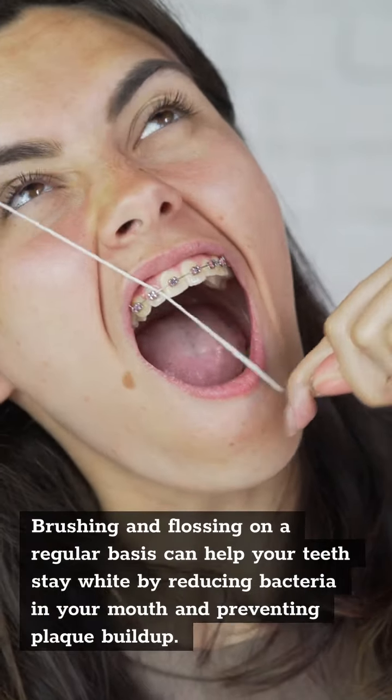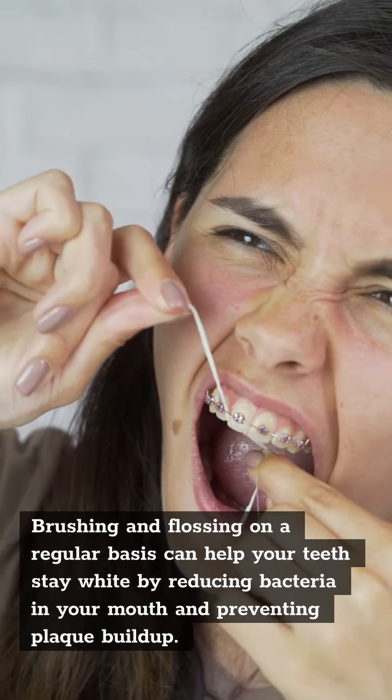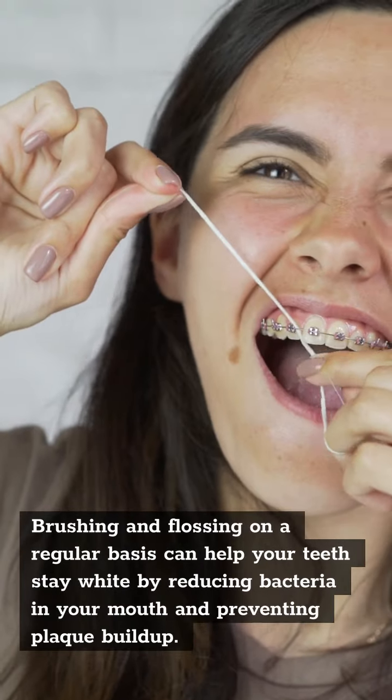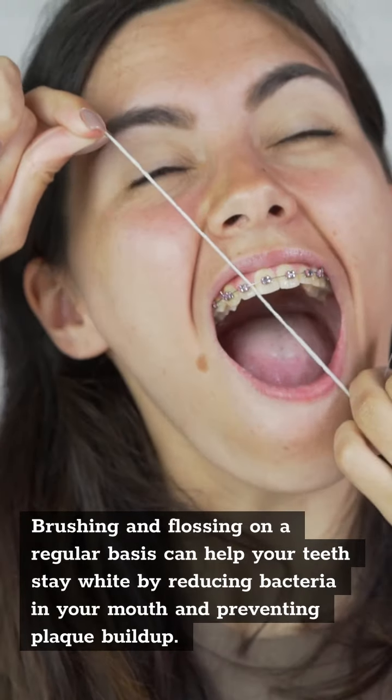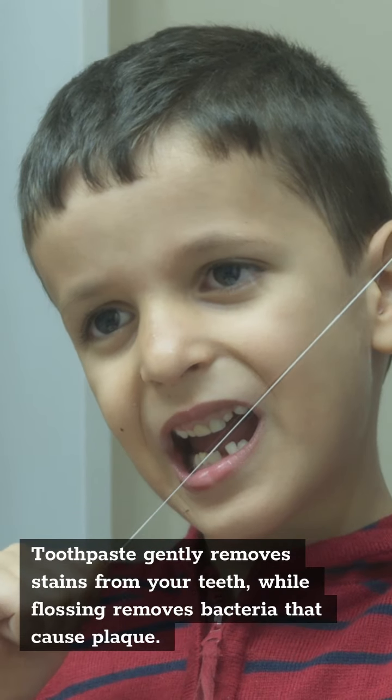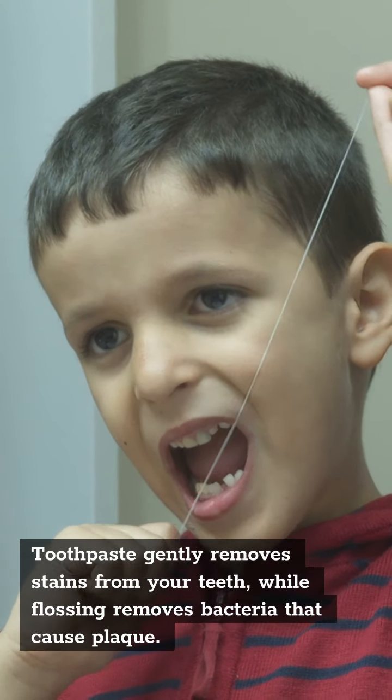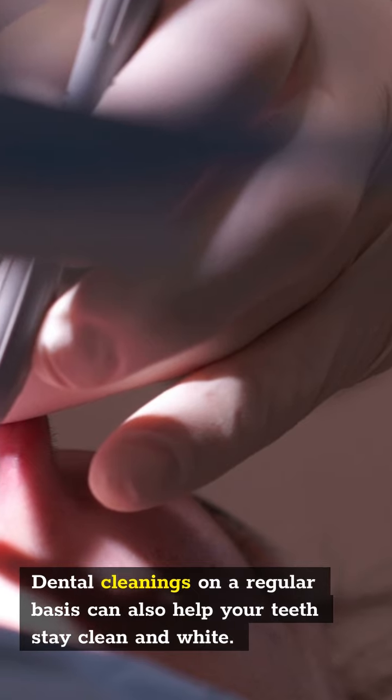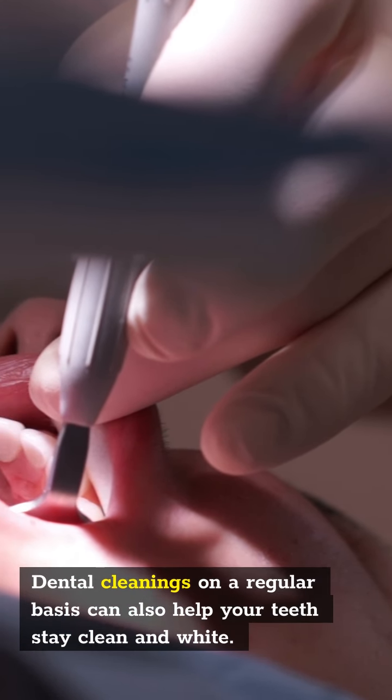Brushing and flossing on a regular basis can help your teeth stay white by reducing bacteria in your mouth and preventing plaque buildup. Toothpaste gently removes stains from your teeth while flossing removes bacteria that causes plaque. Dental cleanings on a regular basis can also help your teeth stay clean and white.